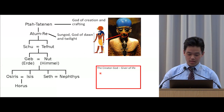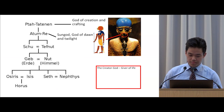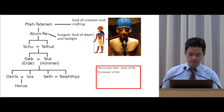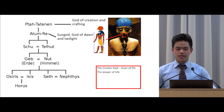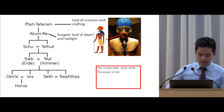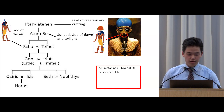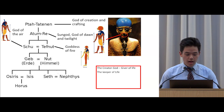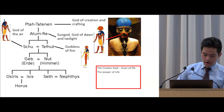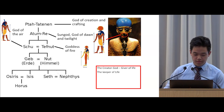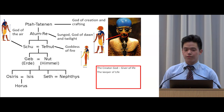His son was the sun god Atomrei — the god of dawn and the god of twilight, and the keeper of life. Atomrei in turn made two children, Shu and Tephnut. Then Shu and Tephnut made two other children, Geb and Nut. Shu and Tephnut are the god of air and the god of fire, and Geb is the god of earth and Nut the god of heaven — these are the four main elements.